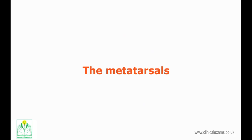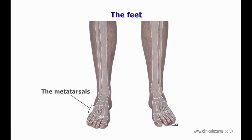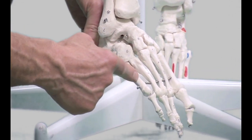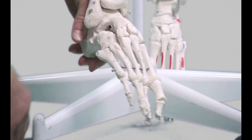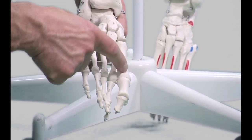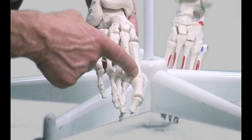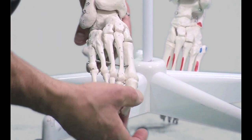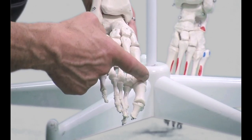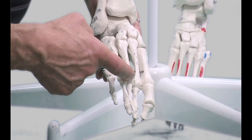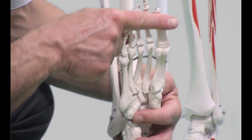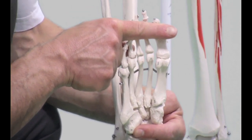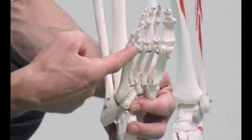The metatarsals are five long bones, slightly convex superiorly, that form a rigid platform for the forefoot. The first metatarsal is by far the thickest, forming a strong articulation with the proximal first phalanx. The distal heads of the metatarsals and proximal heads of the phalanges are larger and more prominent on the plantar aspect of the foot.